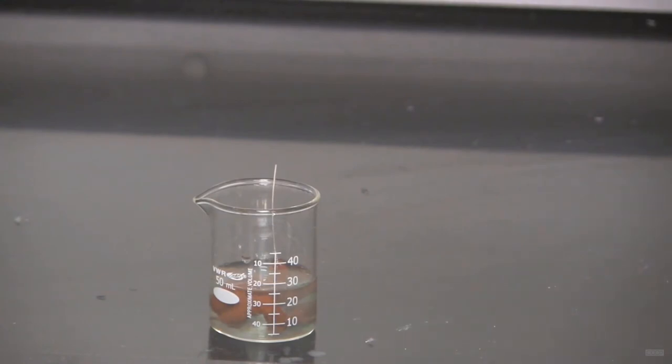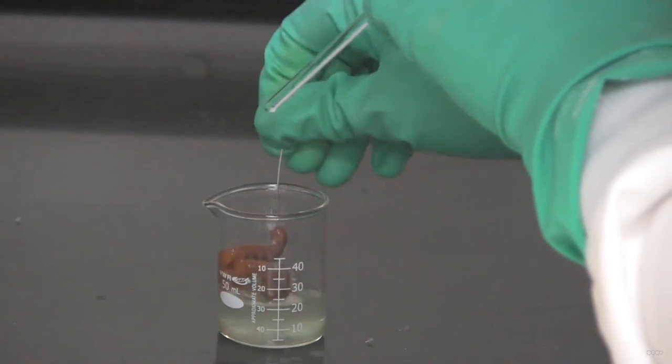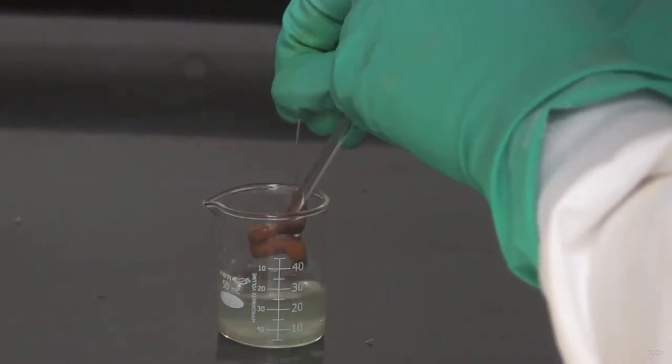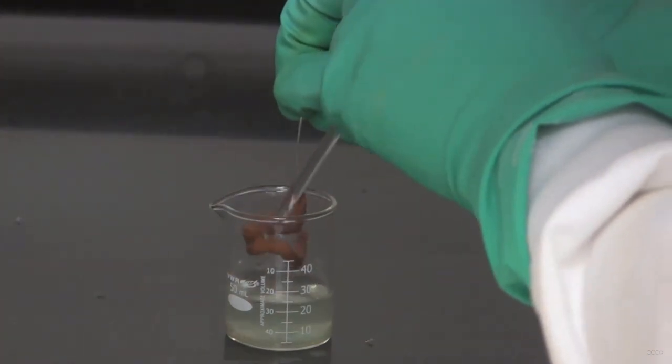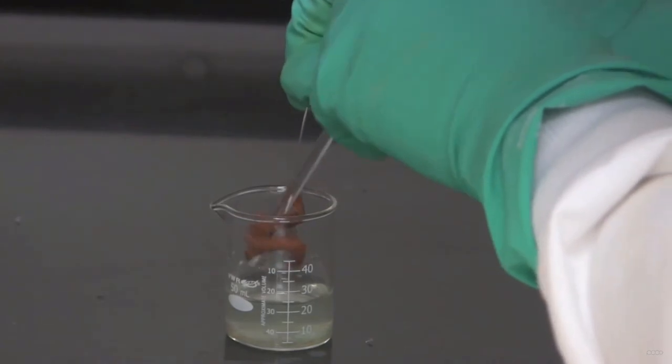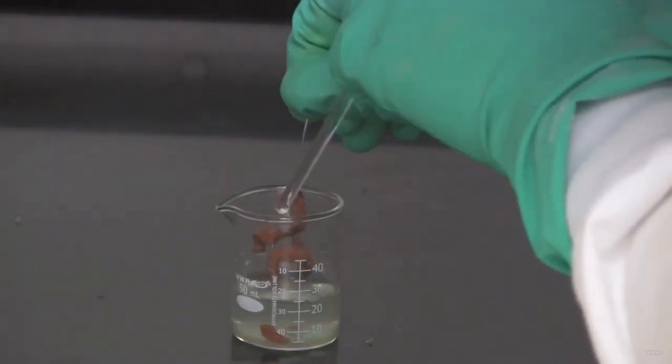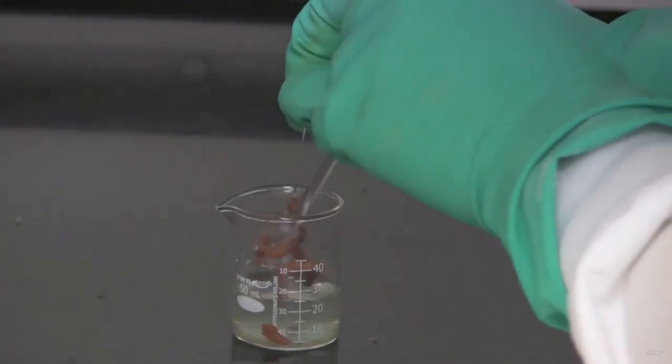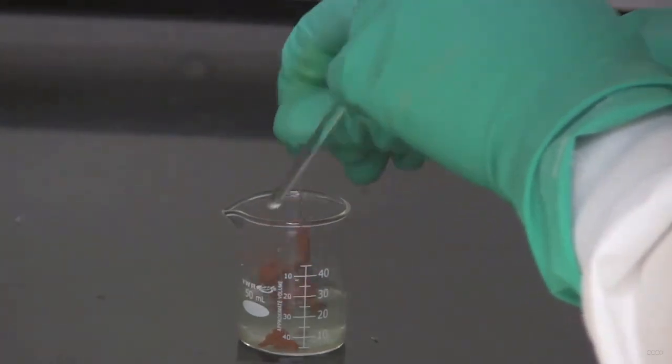Now what I want to show you here is how easily the copper comes off the aluminum wire. And you can see I'm just using a stirring rod here, a glass stirring rod. And you can see how it just sort of flakes off, flakes off the wire.